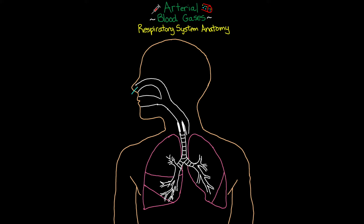When we inhale, air can enter through the nose or the mouth. Air coming through the nose travels through what we call the nasopharynx, and through the mouth it's the oropharynx. These two initially distinct passageways meet up in the back of the throat at an area we call the laryngopharynx. Together these three passageways form what we call the pharynx.